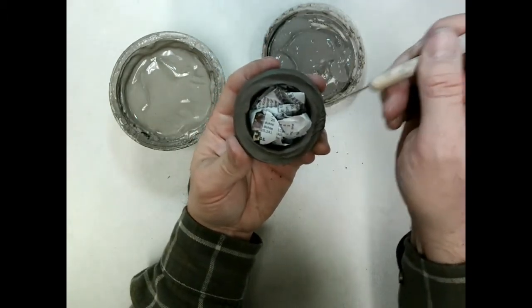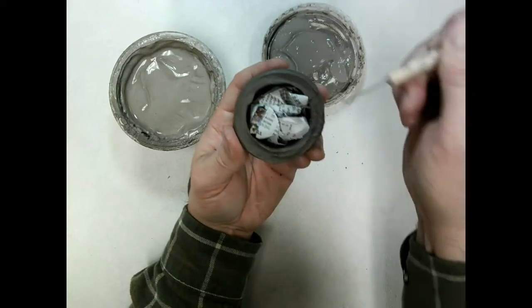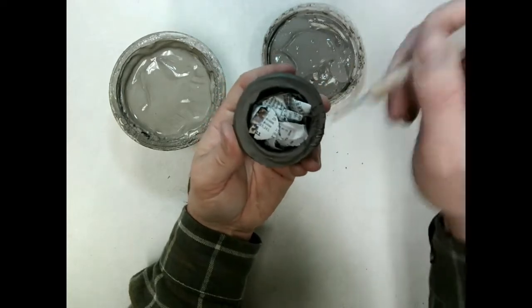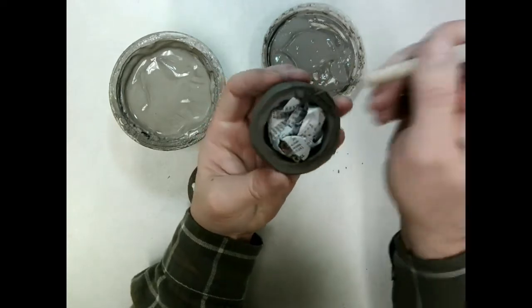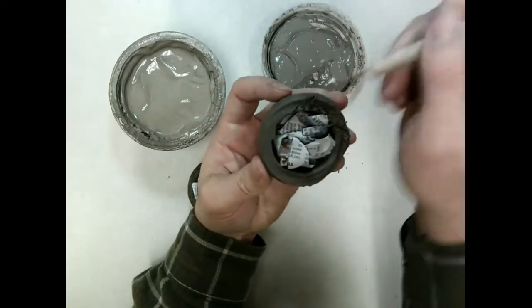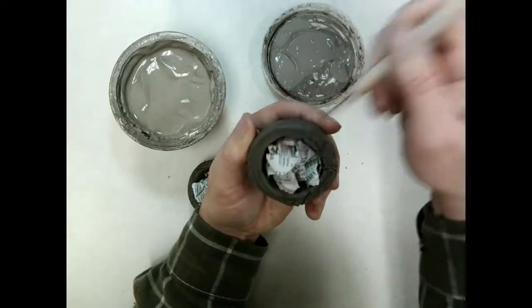A mistake I see people make sometimes when they're scoring is they make nice, neat little lines. You don't want that. You want to really scrape up the surface and rough it up. So make sure that when you score, you're scoring and roughing up the surface really well.